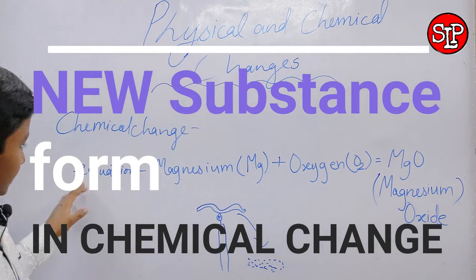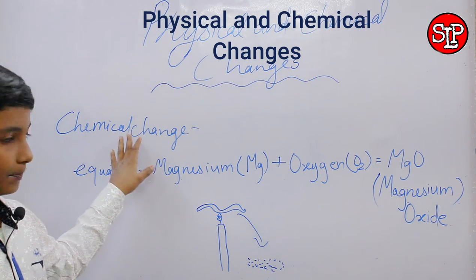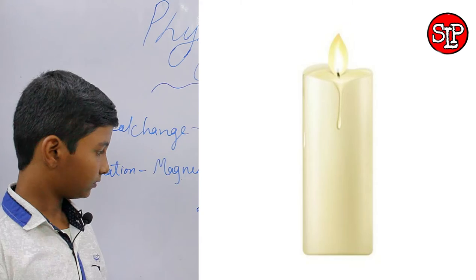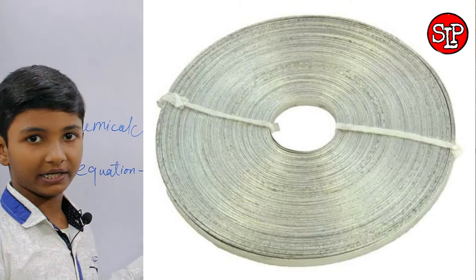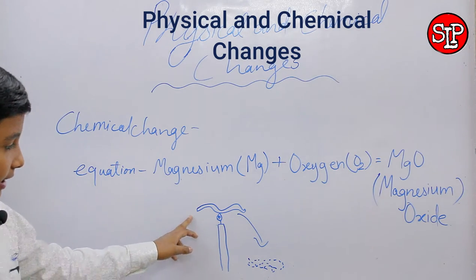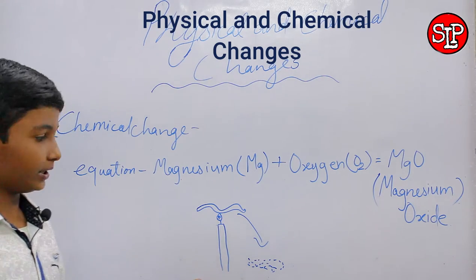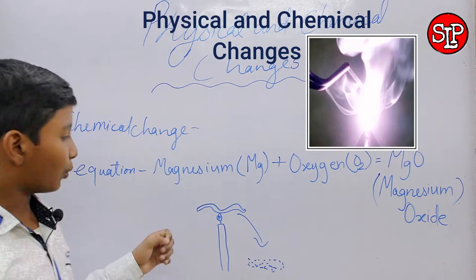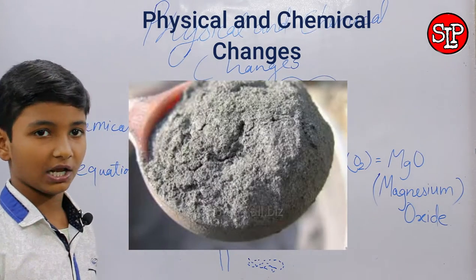So we have an example for this topic, chemical change, which is take a candle and take a ribbon of magnesium and clean its tip by sandpaper. And slowly burn it from its tip and you will see white light and then it will form a powdery ash.